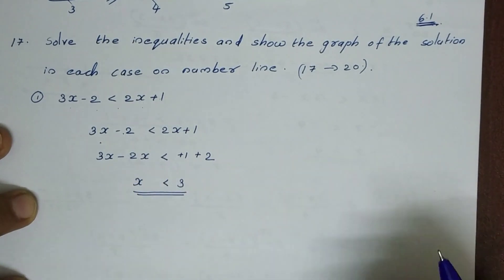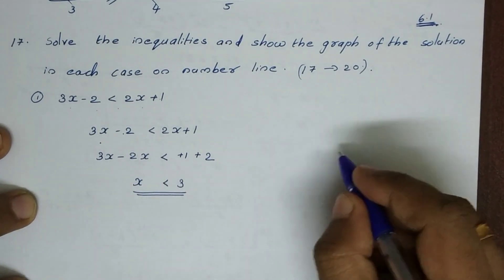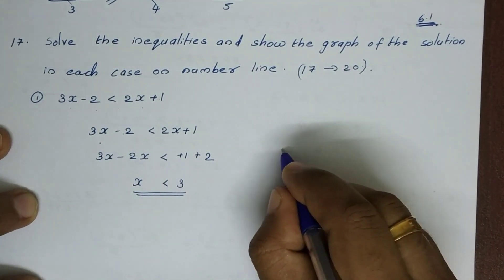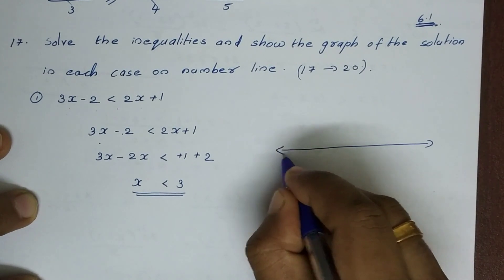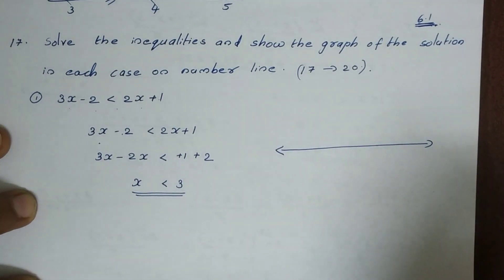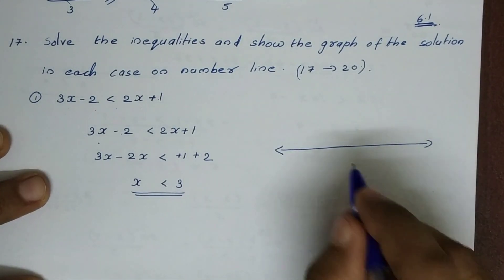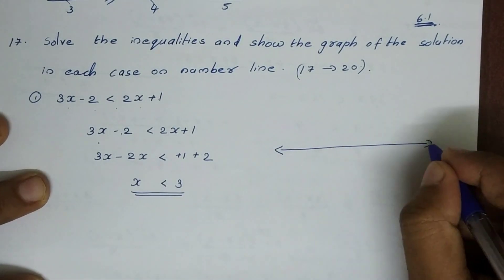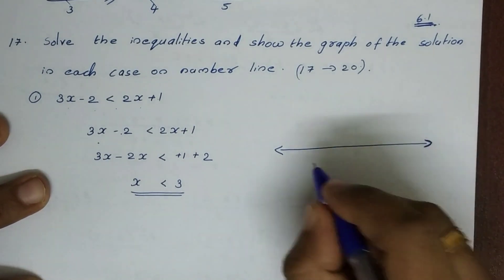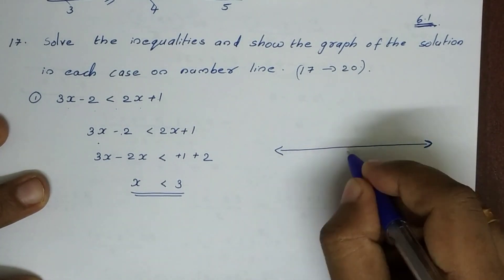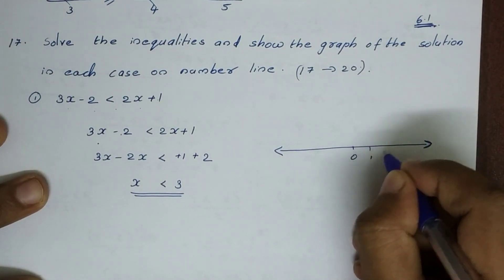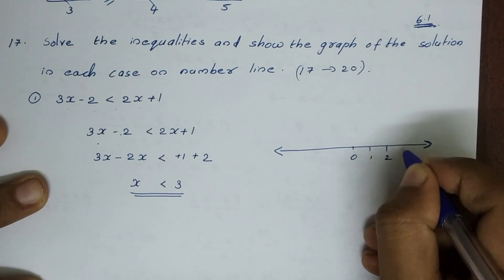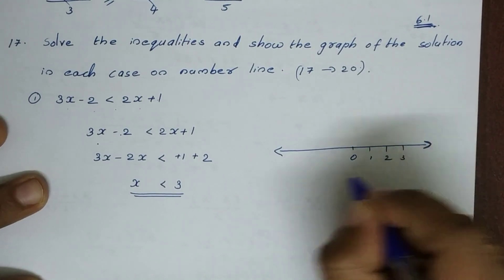x is less than 3, so we have to write this on the number line graph. In this graph, we write the number line. This graph shows 1, 2, 3 on one side, and minus 1, minus 2, minus 3 on the other side.